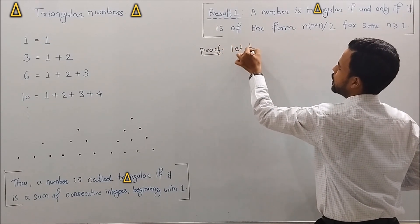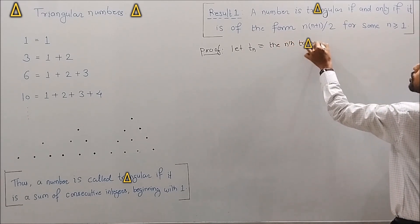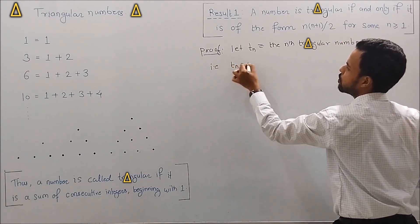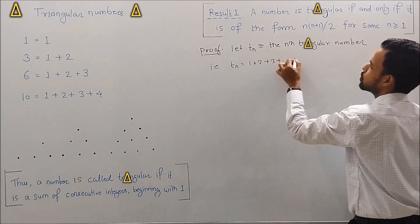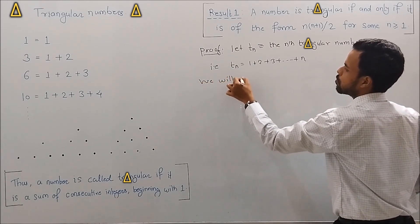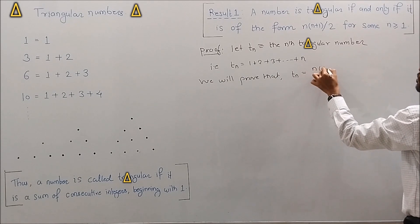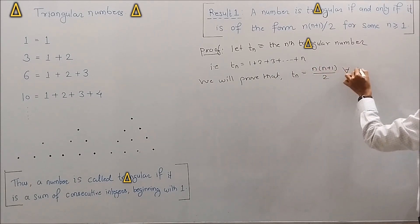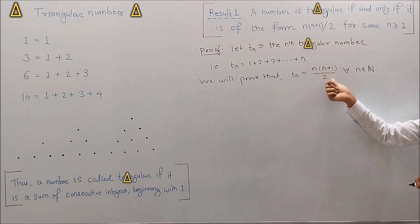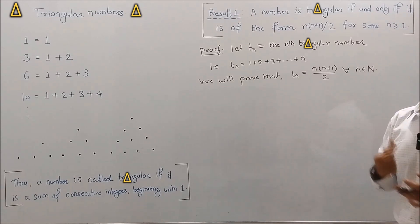Let T_n denote the nth triangular number. That is, T_n = 1 + 2 + 3 + … + n. We will prove that T_n = n(n+1)/2 for every n belonging to the set of natural numbers, using mathematical induction.